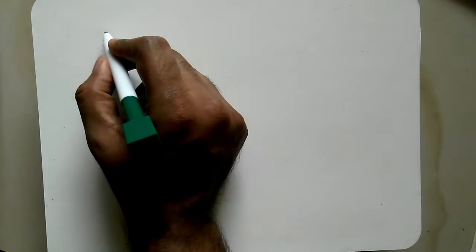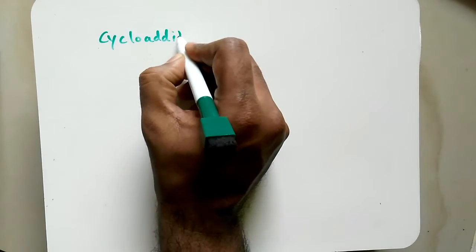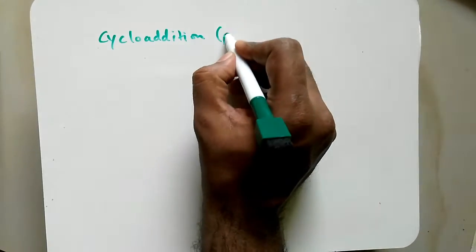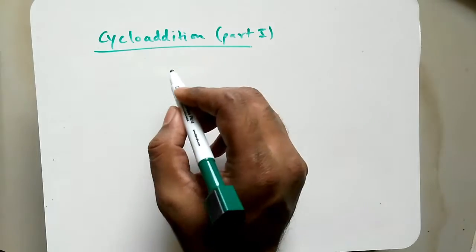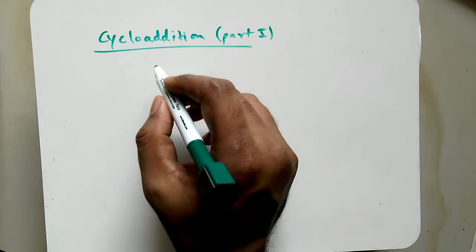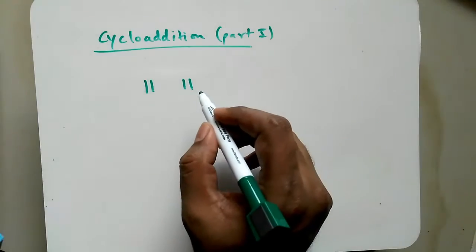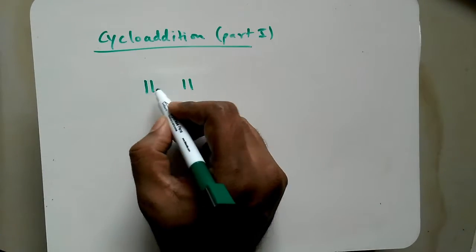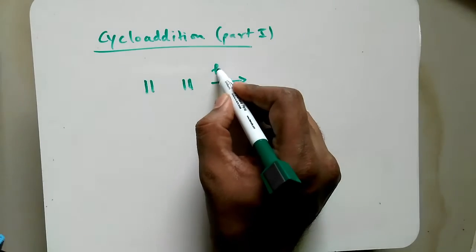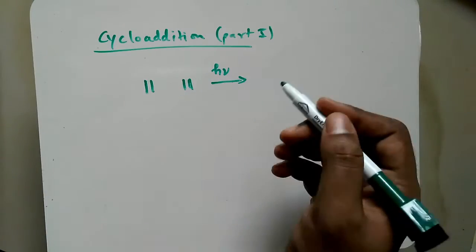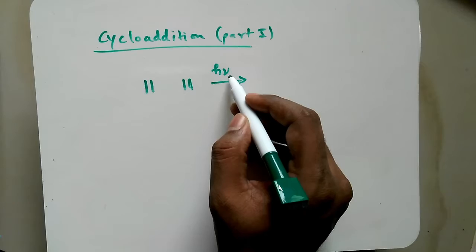Welcome to cycloaddition reactions — this will be part one. It is a type of pericyclic reaction. In a cycloaddition reaction, unsaturated compounds or molecules react. This is ethene; they will react to form products. We can have two different modes: photochemical reactions and thermal conditions.